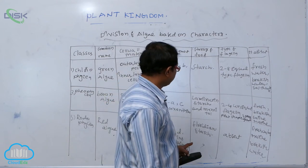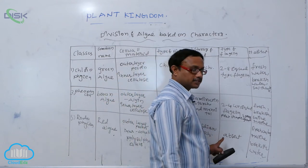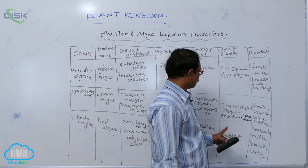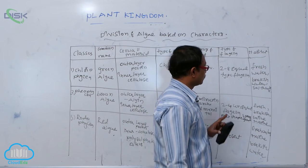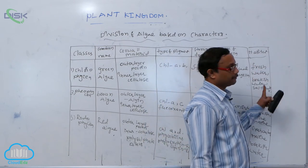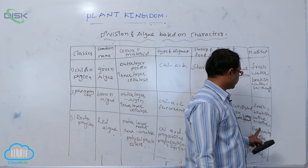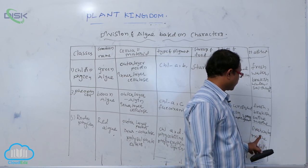Storage material is floridean starch. Flagella are completely absent in both asexual and sexual reproduction. The habitat is generally freshwater.